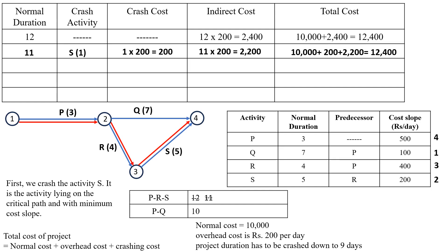Next, we crash activity S by another day, so the duration becomes 10 days. The cumulative crashing cost is now 2 days into 200, which equals 400. The indirect cost becomes 10 days into 200, that is 2,000. Total cost is 10,000 plus 400 plus 2,000, equal to 12,400.